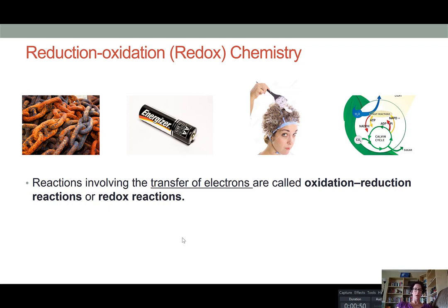We have some iron chain rusting or oxidizing, a nickel cadmium alkaline battery, hair that's being bleached, and this last one, a much more complex but very important redox reaction, is the reaction that allows photosynthesis to occur.